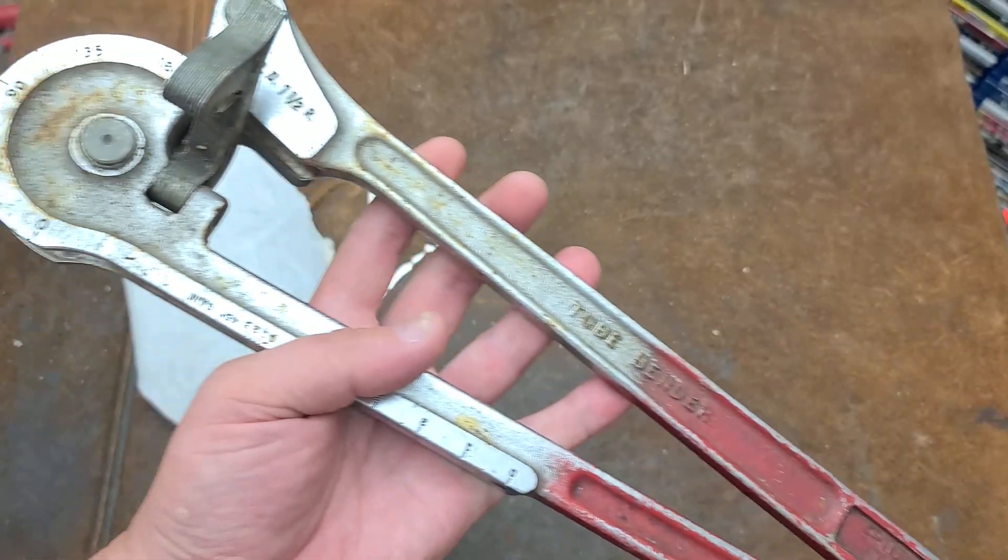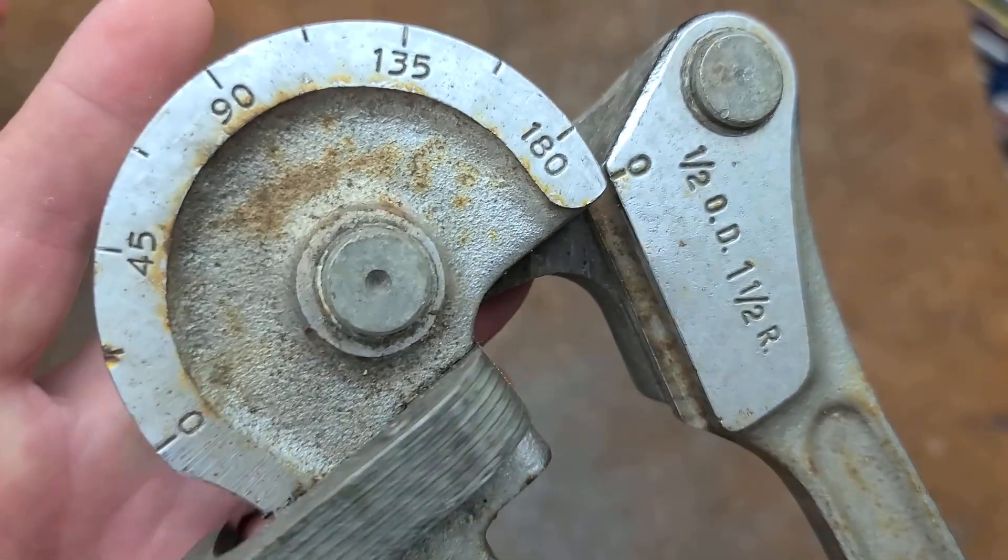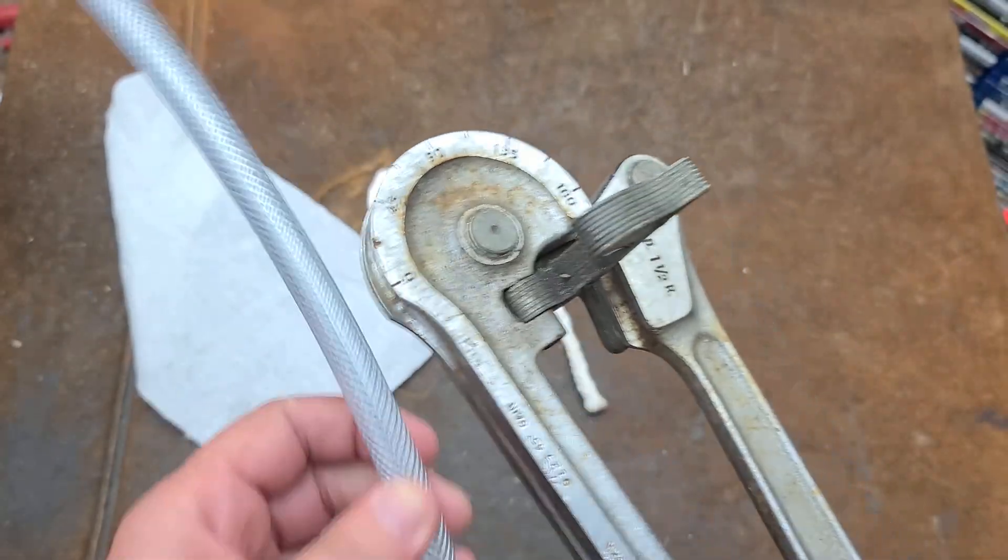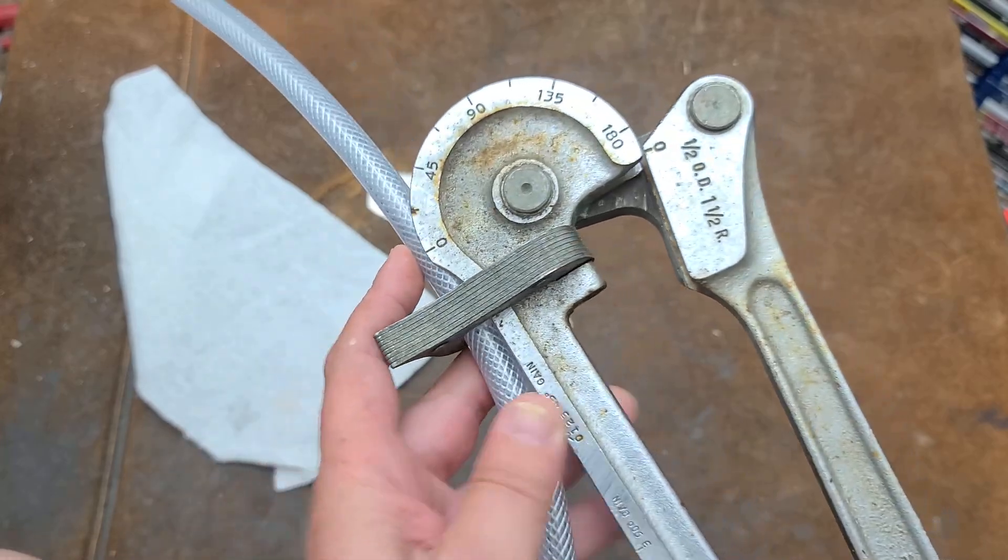This is a much nicer one. We have these big thick laminated steel catches. The point is that when you put in the tube, this will come over and lock over the tube itself.